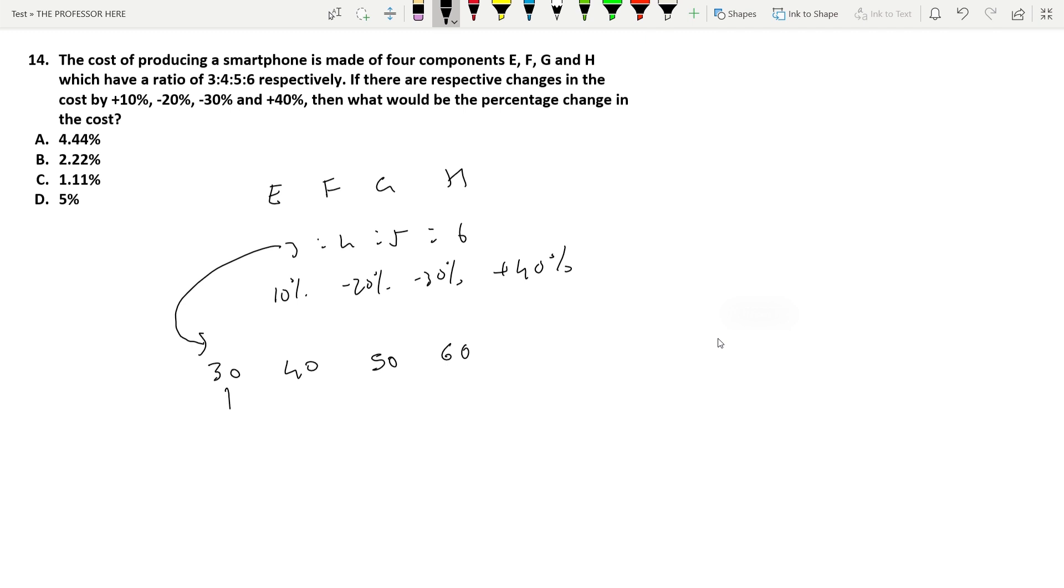Now change for E is 10 percentage. 10 percentage of 30 is 3. It is plus 10 percentage so it becomes 33. Next is minus 20 percentage. 20 percentage of 40 is 8, minus 8 it will become 32. 30 percentage of 50 is 15, so it become 50 minus 15, it is 35. For H it is 40 percentage increase which means 40 percentage of 60 is 24, it becomes 60 plus 24, 84. So this was the initial value and this is the final value after change.